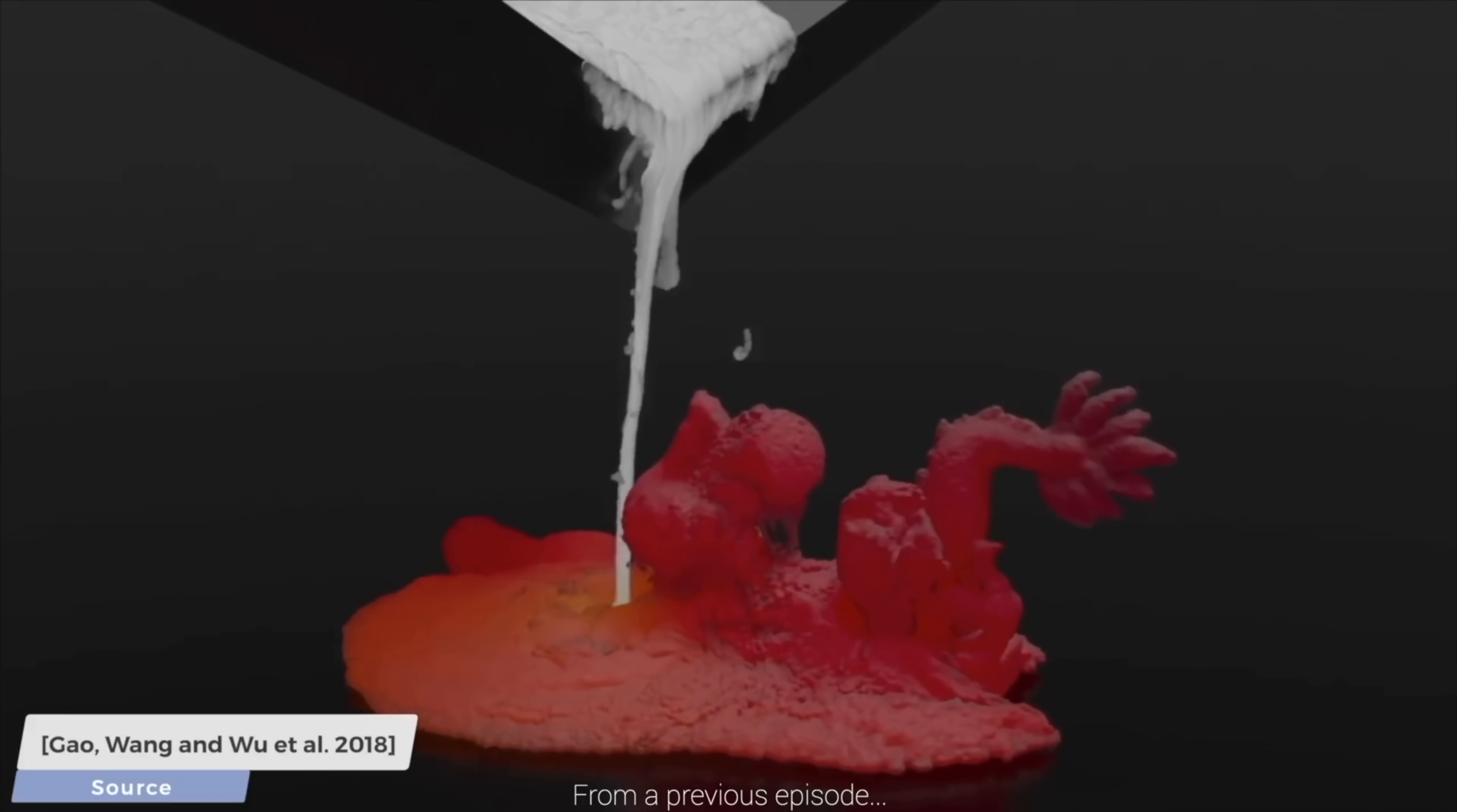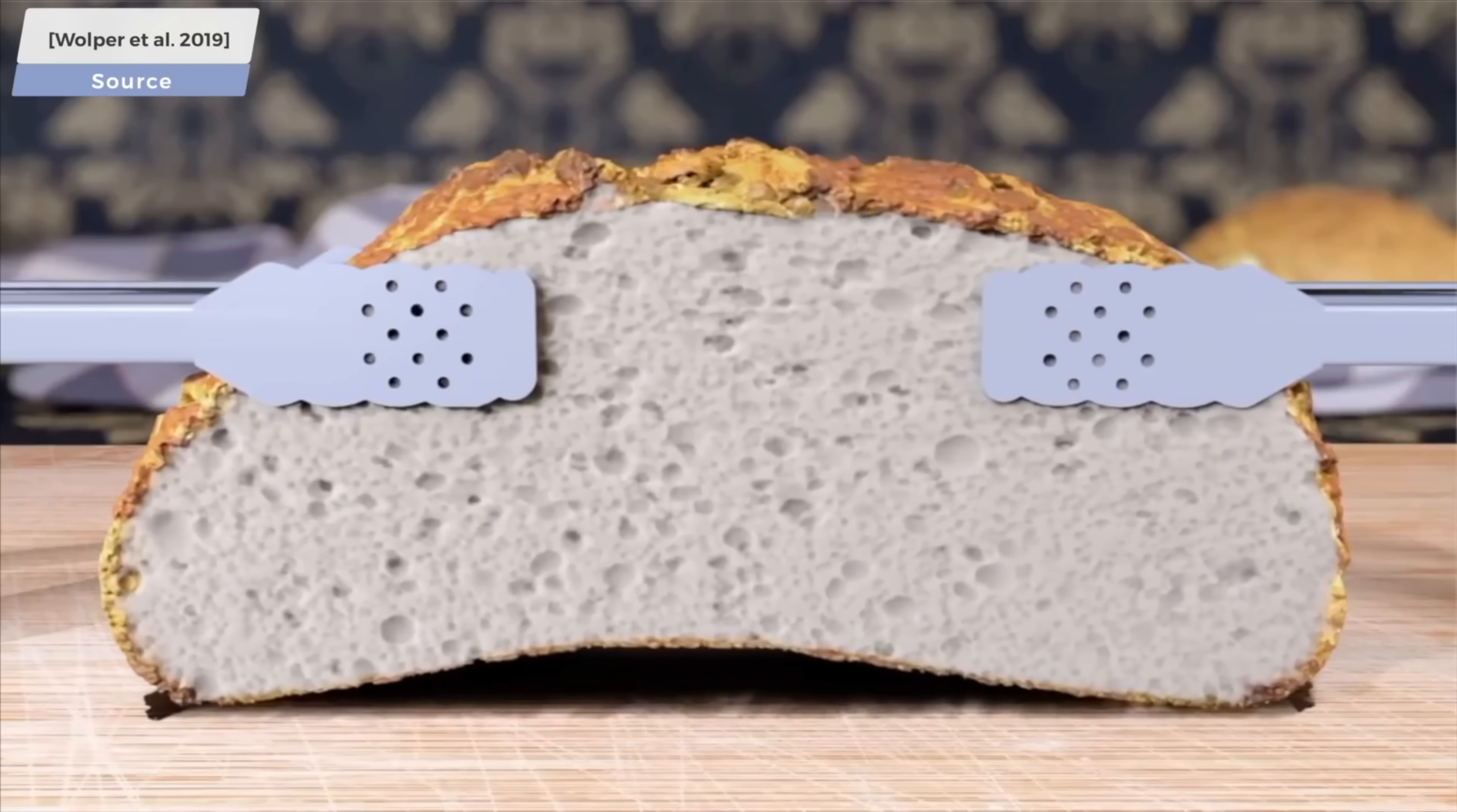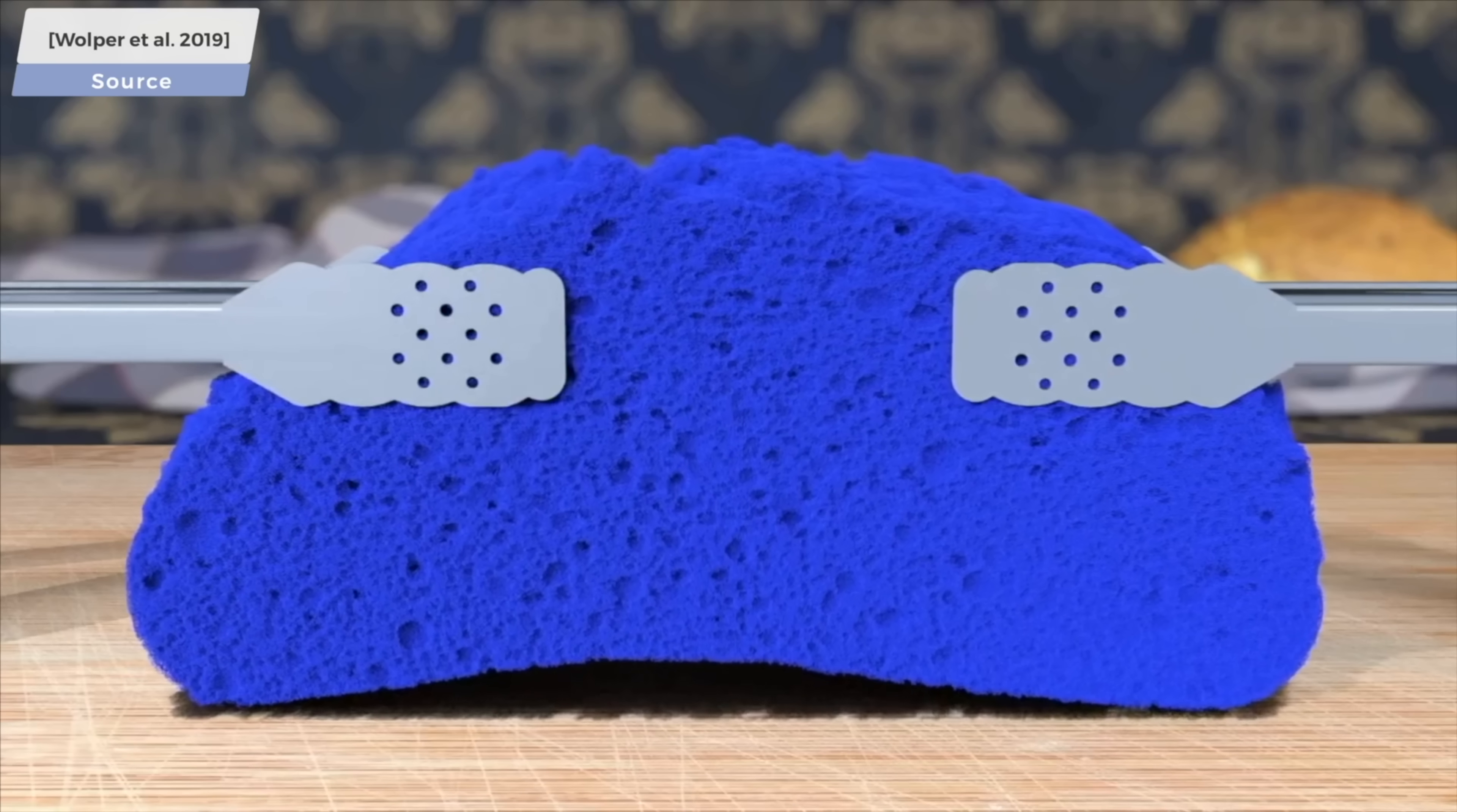However, when used by itself, we can come up with a bunch of phenomena that it cannot simulate properly. One such example is cracking and tearing phenomena, which has been addressed in a previous paper that we covered a few videos ago.